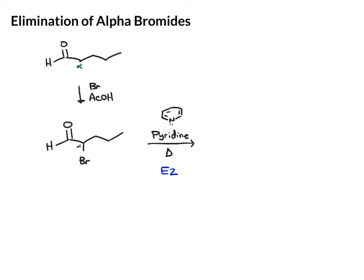So here's our alpha bromide. At the beta carbon, we have hydrogens — I'm just going to draw one of those in. And what the pyridine can do as a base is take that proton and do the elimination.